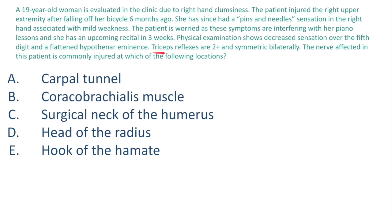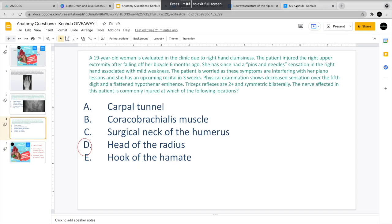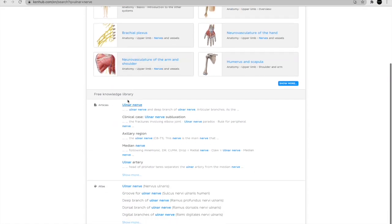By now you've likely figured out something is wrong with the ulnar nerve. Triceps reflexes are normal, which indicates the radial nerve is intact. The question asks: the nerve affecting this patient is commonly injured at which of the following locations? The carpal tunnel would be the case if it were the median nerve — that's not the case here. Surgical neck of humerus is for the axillary nerve. The musculocutaneous nerve relates to coracobrachialis. Head of the radius — let's check Kenhub.